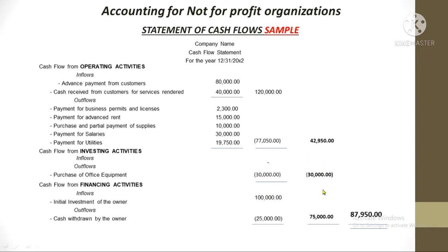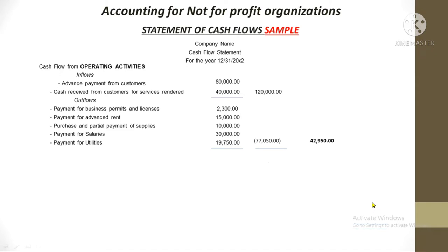The summary of all three sections is added to the cash beginning balance to get the cash ending balance — that's the cash flow statement for both for-profit organizations and NPOs. Remember also that cash flows from operating activities can be prepared using the direct method or the indirect method.